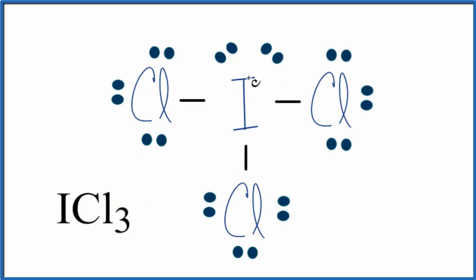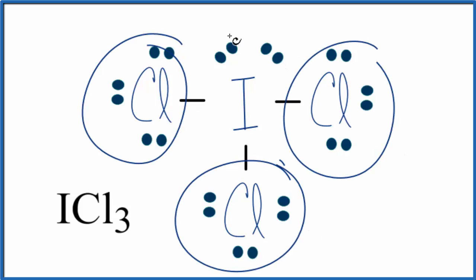So we can imagine that we have this central iodine atom, and we have five different things around it. Right here, like this, are three atoms and two lone pairs. And these are all pushing away from each other. So this is going to spread out, and it's going to give us our molecular geometry.